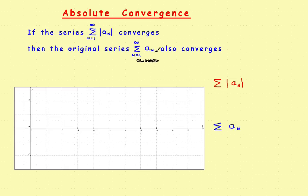The plan will be this: if you're given an original series that has positive and negative numbers in it, you change it into a series that only has positive numbers by taking the absolute value. Then if you can show that this new positive series converges, you can conclude that the original series has to converge. Let's take a quick look graphically at what all this looks like — let's suppose the original series was given a specific value.